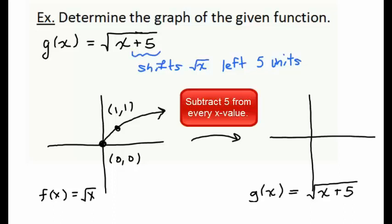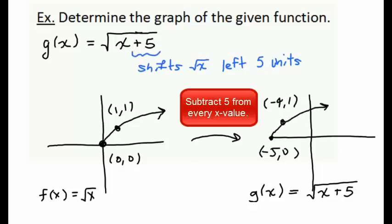Beginning with the origin, we subtract 5 from the x-coordinate to get (-5, 0). Continuing with another point, subtracting 5 gives us (-4, 1). Our new function is going to have a very similar shape to our original function because we haven't stretched or compressed — we've just moved it over five units, opening to the right.